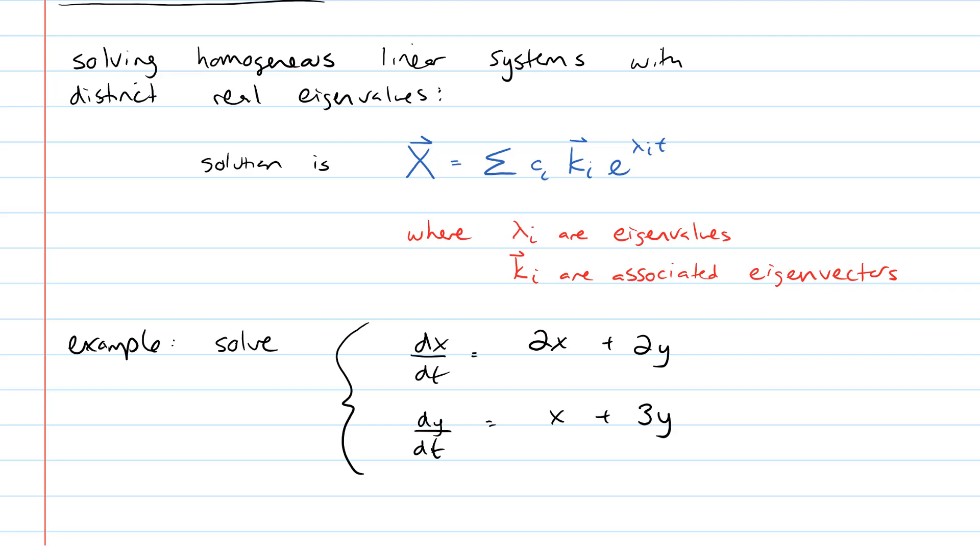Recall that from the theory, our solution is that our vector capital X is equal to the sum of c_i vector k_i e to the power of lambda_i times t, where lambda_i are the eigenvalues and k_i are the associated eigenvectors for your matrix A.